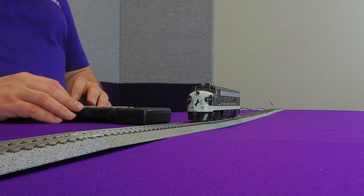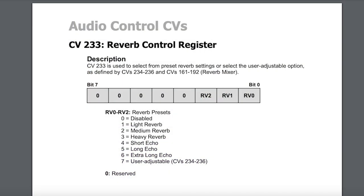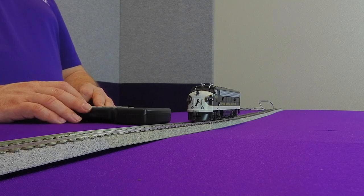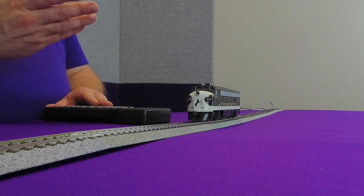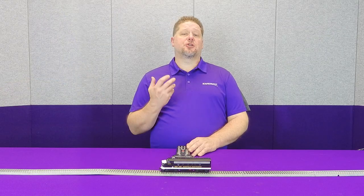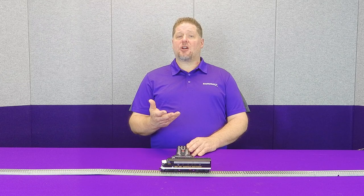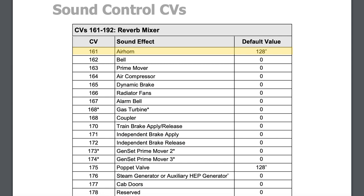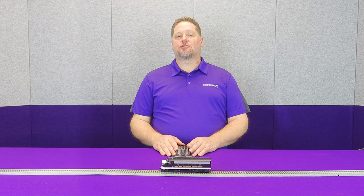Now in CV-233, I'm going to go ahead and select a heavy echo. So that's CV-233 to a value of 4. Now when I blow my horn, you can hear a whole lot more echo. This allows you to give some more depth to your horns. Now the last thing is the percentage of that air horn reverb and echo that's fed back in, and this is adjusted by CV-161. A value from 0 to 255 represents 0 to 100%. So adjust these values and see what sounds right for you.